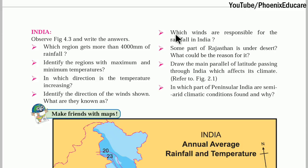Climate is the fourth chapter in 10th Maharashtra State Board Geography. In the first part we have seen the climate of Brazil and the different factors affecting it. Now we will see what are the different factors that are affecting the climate of India.